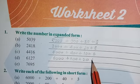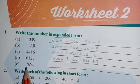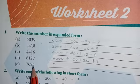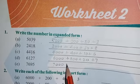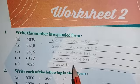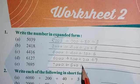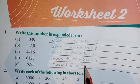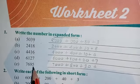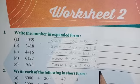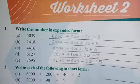Similarly for the next number: 6000 + 100 + 20 + 7. And the last number 7695: 7 with three zeros is 7000, 6 with two zeros is plus 600, 9 with one zero is plus 90, and last digit is 5: plus 5.